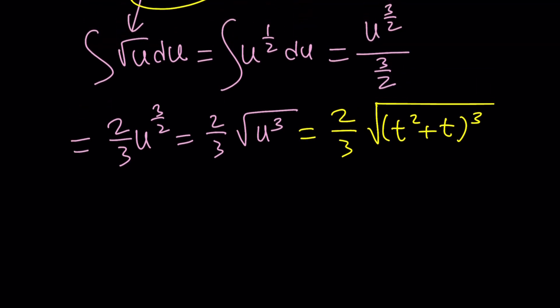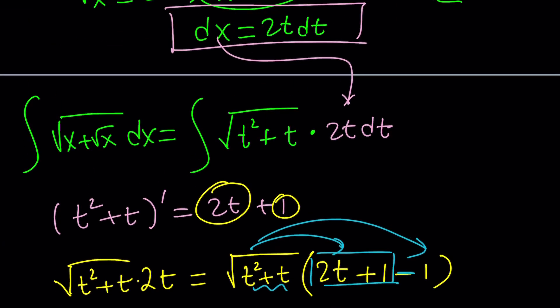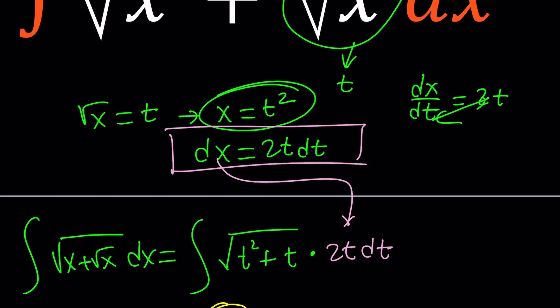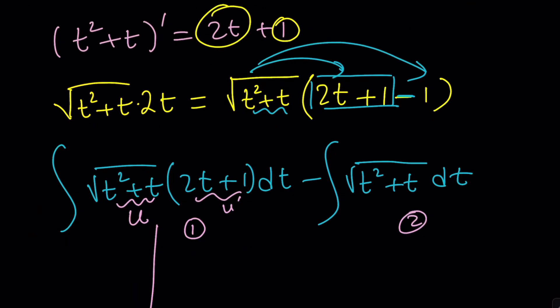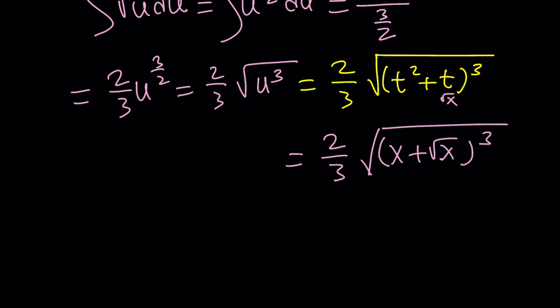This is not the final answer yet because our result needs to be in terms of x. Since t = √x, we go back and replace: t² = x, so we get (2/3) times the square root of (x + √x)³. That's the first piece, which is the easier piece.